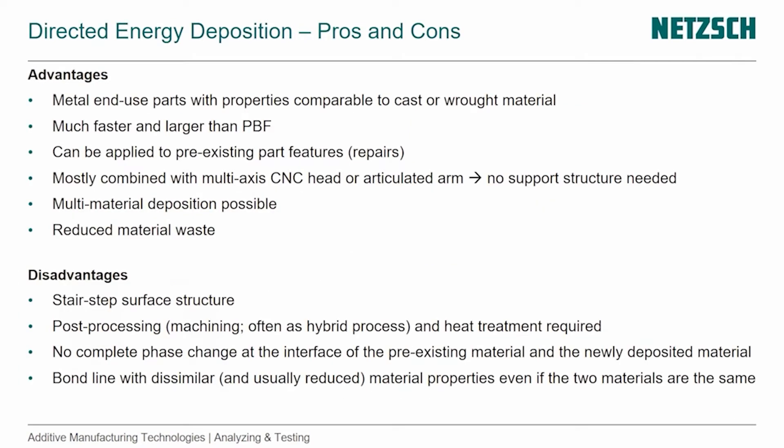That already takes us to advantages and disadvantages. The metal parts are end-use parts with properties comparable to cast or wrought material, much faster and larger than powder bed fusion. It's really a rapid process. It can be applied to pre-existing part features — that was one of the reasons it was invented — and you can use it for repairs.